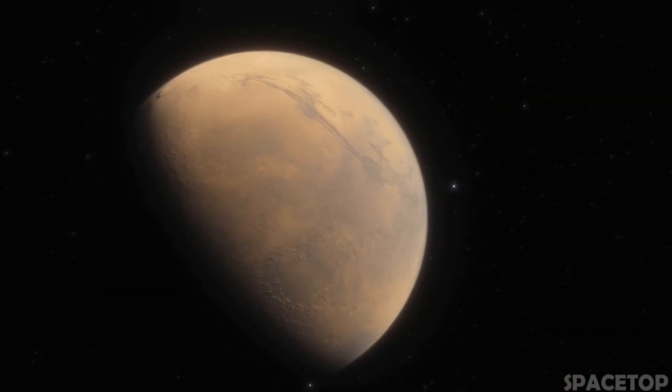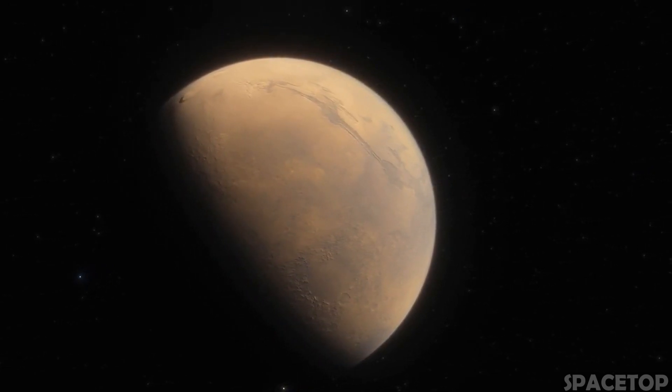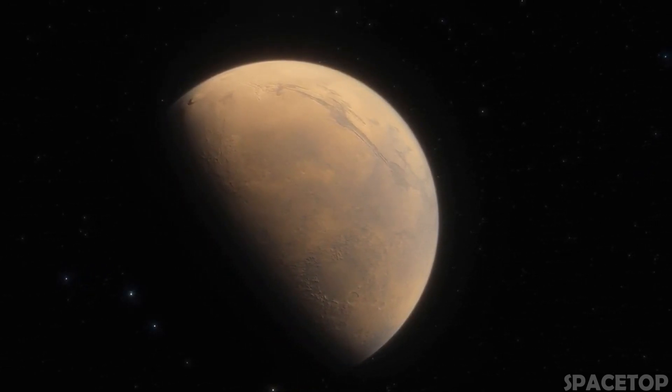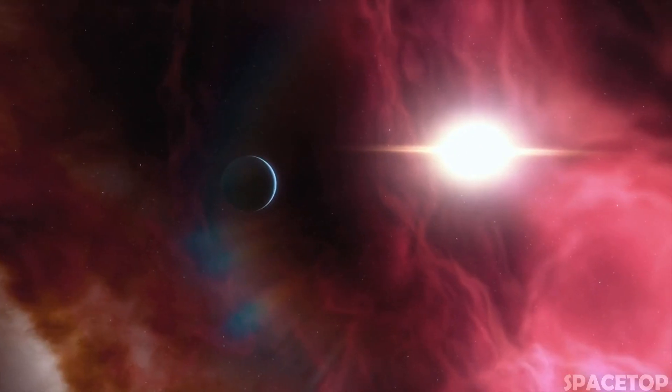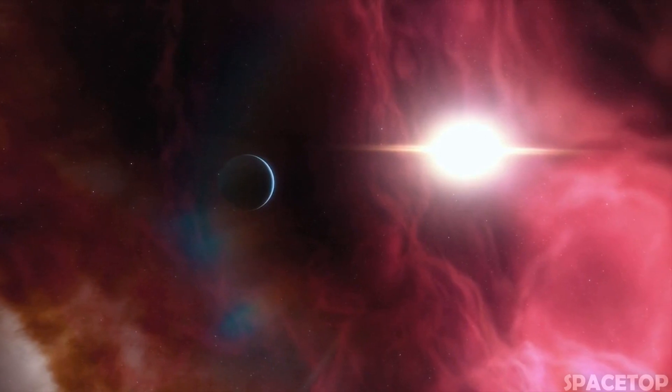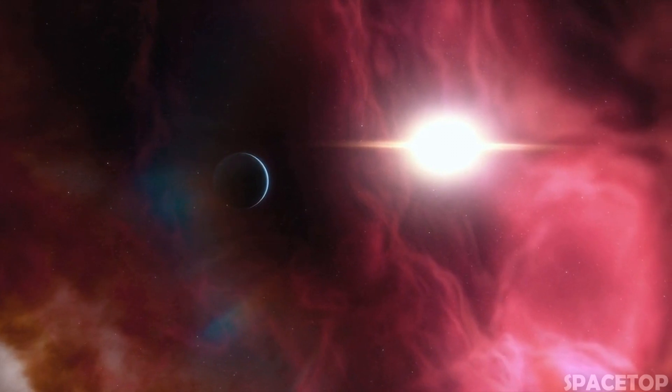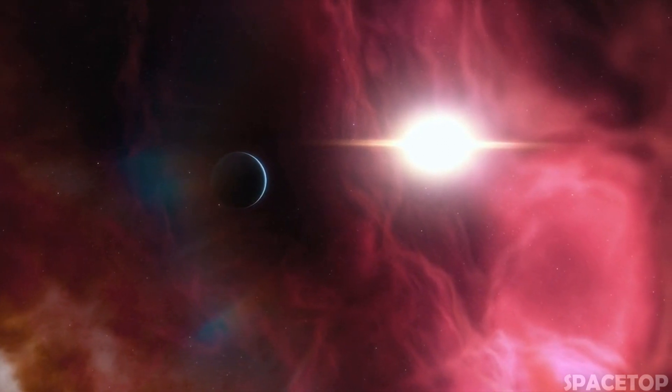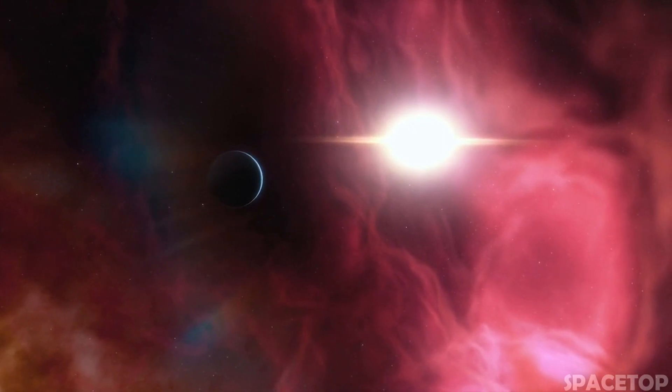Moreover, the core of WASP-107b is only 4 times larger than the core of the Earth, while it should be about 10 times larger than the core of our planet. Because of all this, WASP-107b has an incredibly low density. In fact, it's like a marshmallow floating in space. So far, none of these worlds seem to give us any hope of colonizing them.